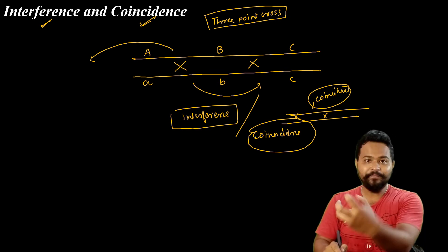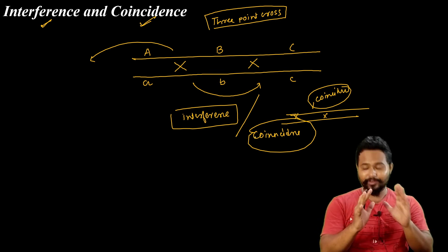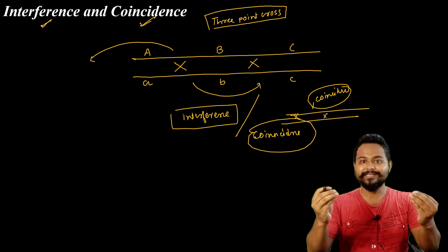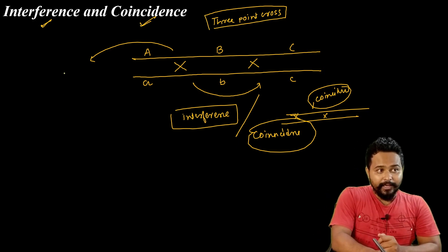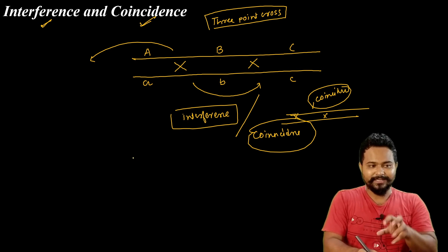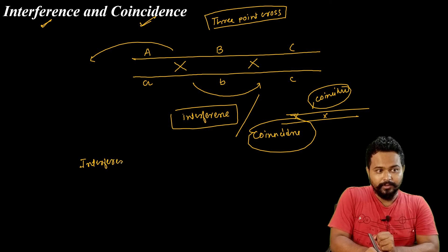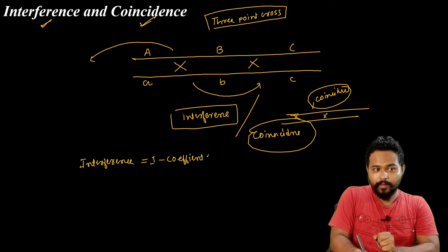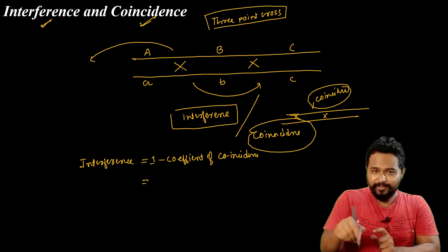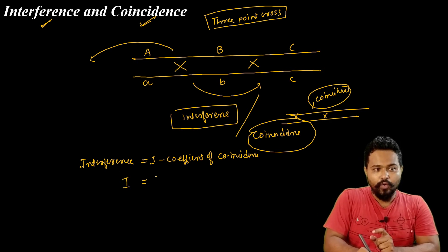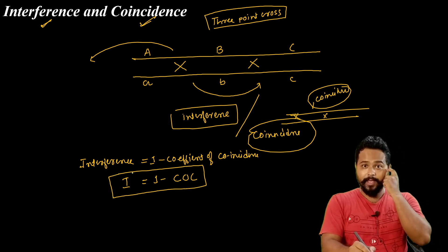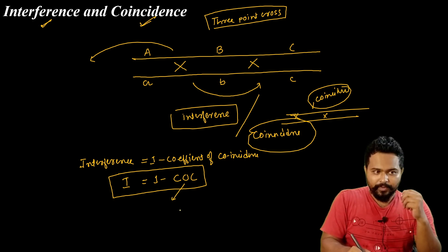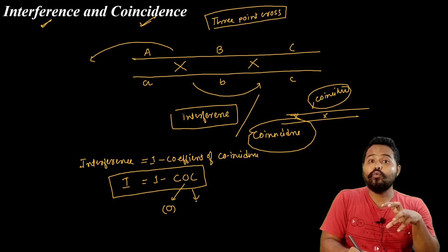The difference between interference and coincidence is expressed as a mathematical formula. Interference (I) is equal to 1 minus the coefficient of coincidence. In abbreviated form: I = 1 − CoC. The coefficient of coincidence is the key value we need to calculate first.